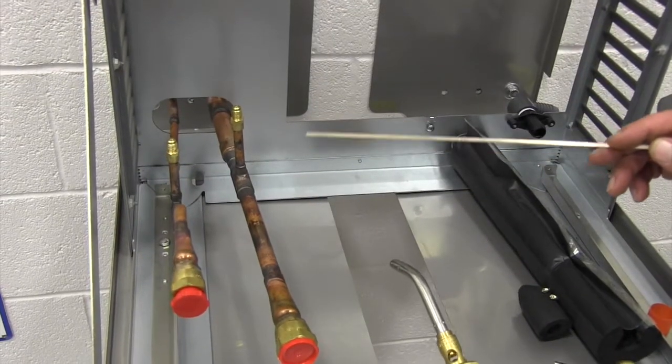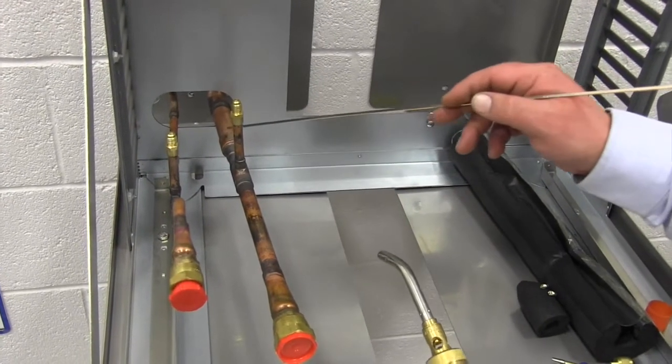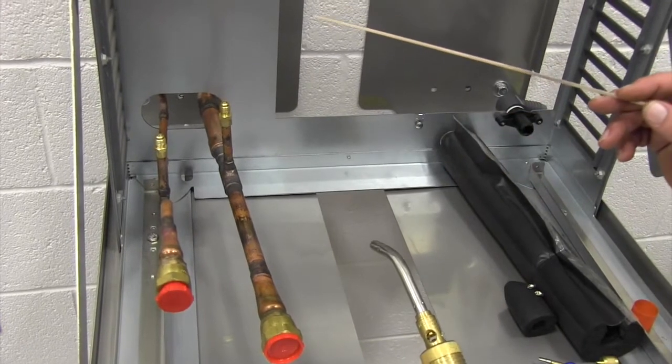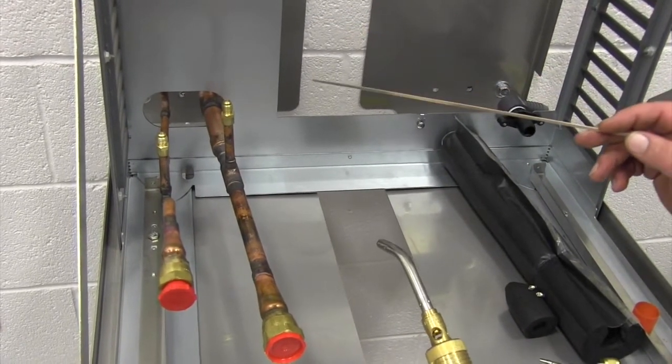Now that we have nitrogen flowing through our refrigeration lines, we're going to go ahead and solder the suction and liquid line with a Silphos 15 braze rod.